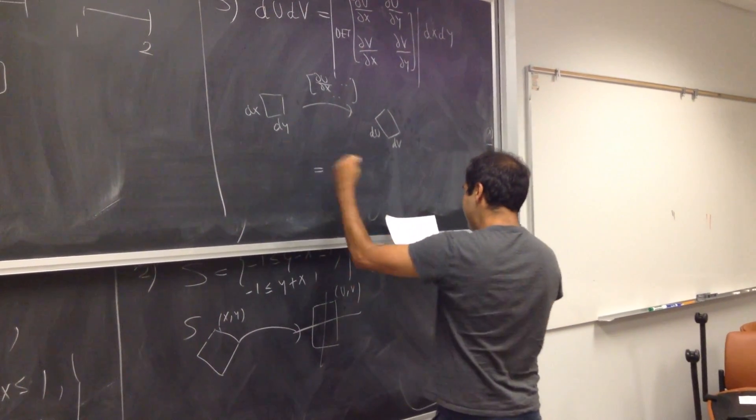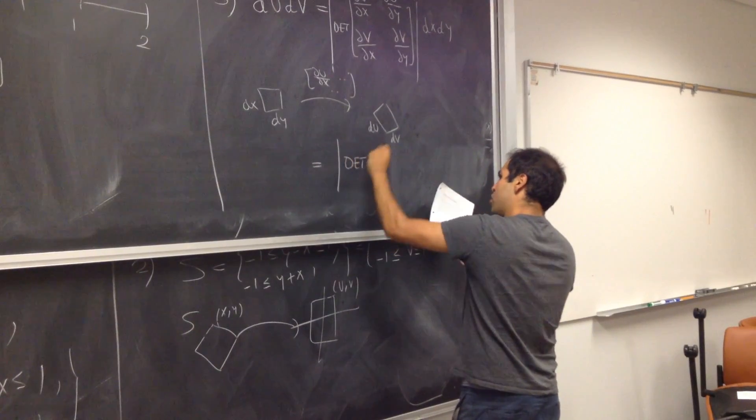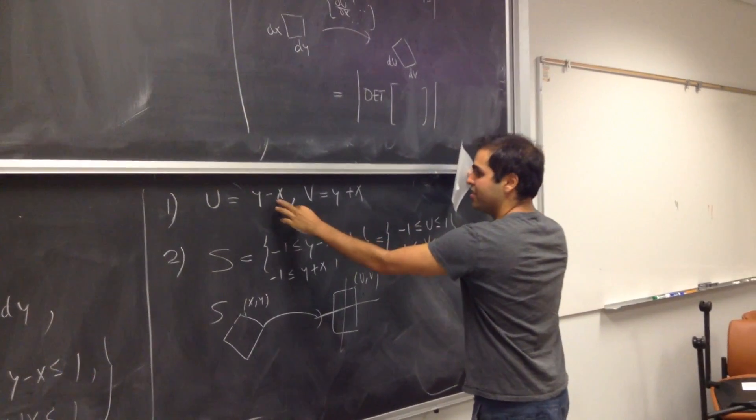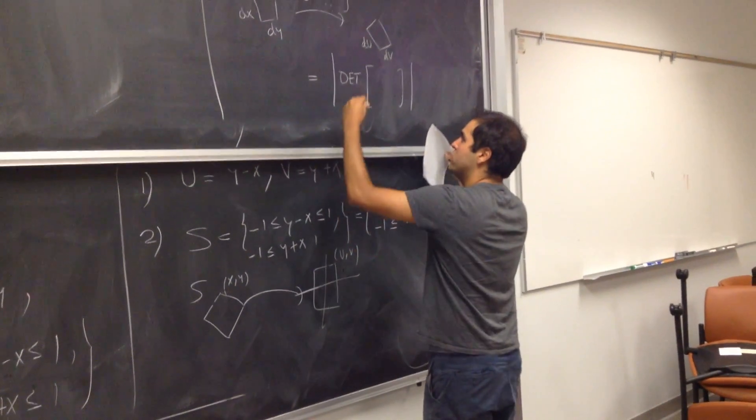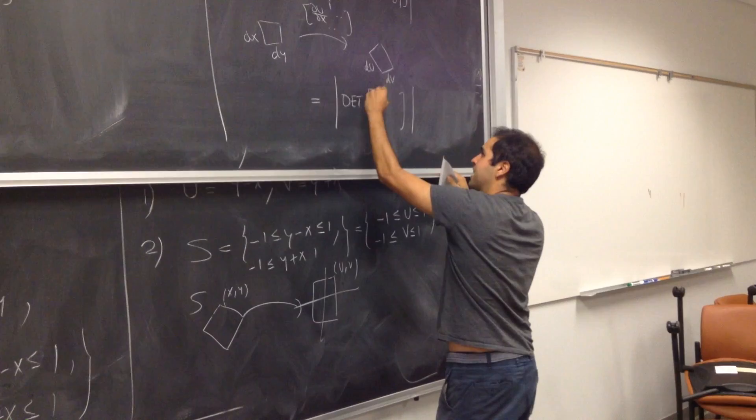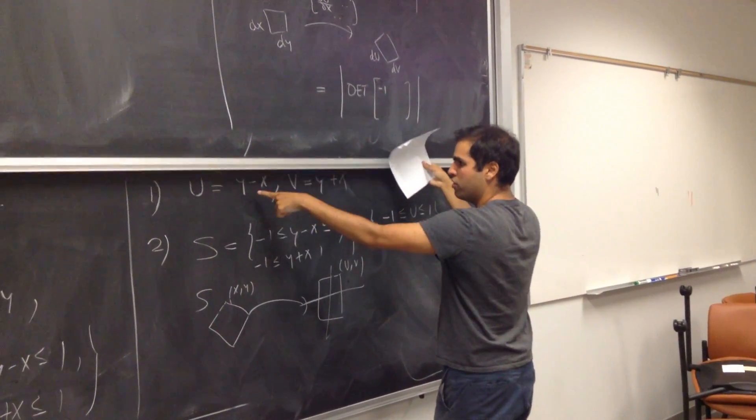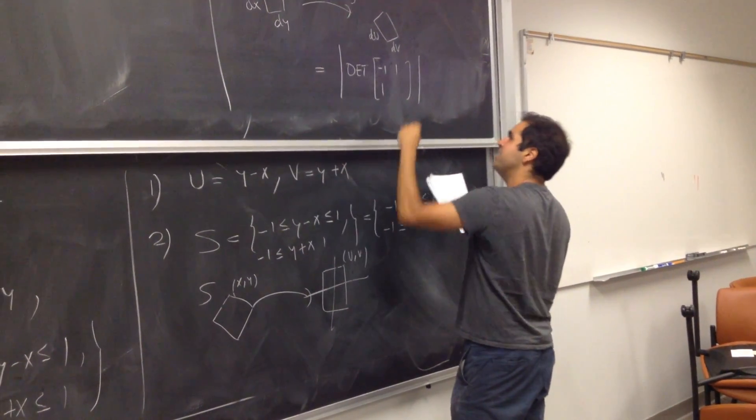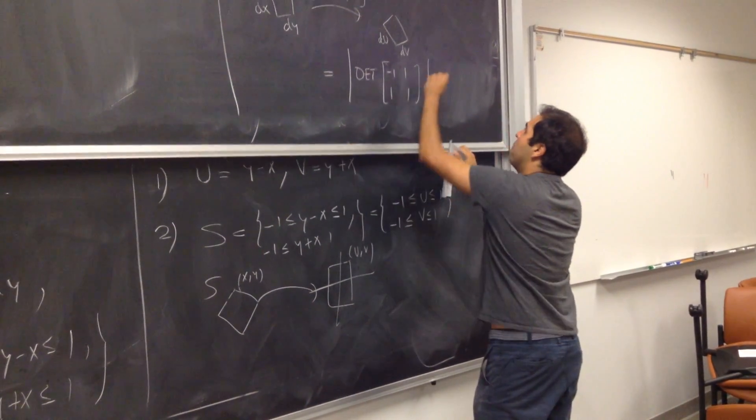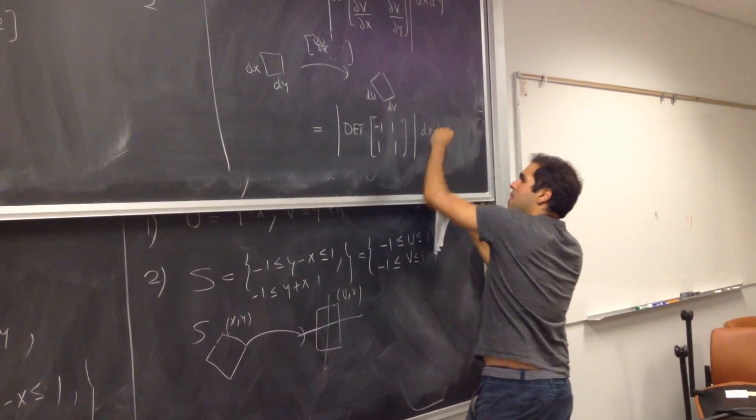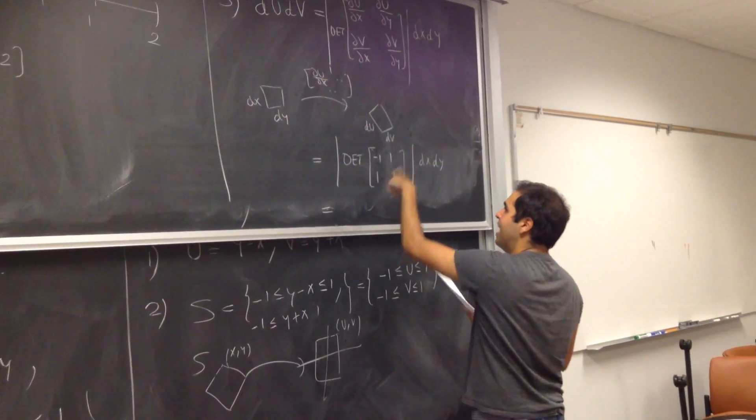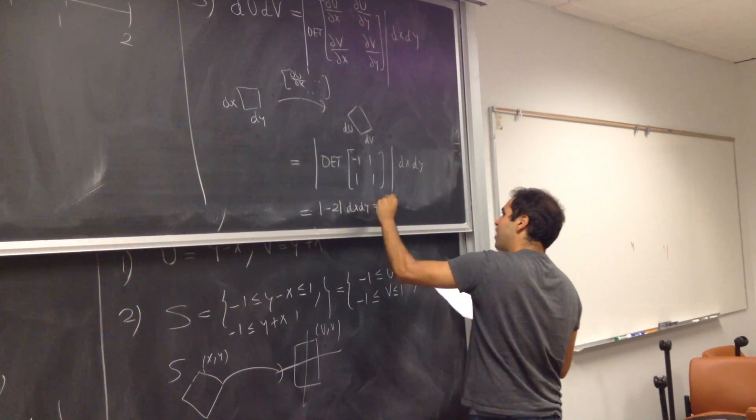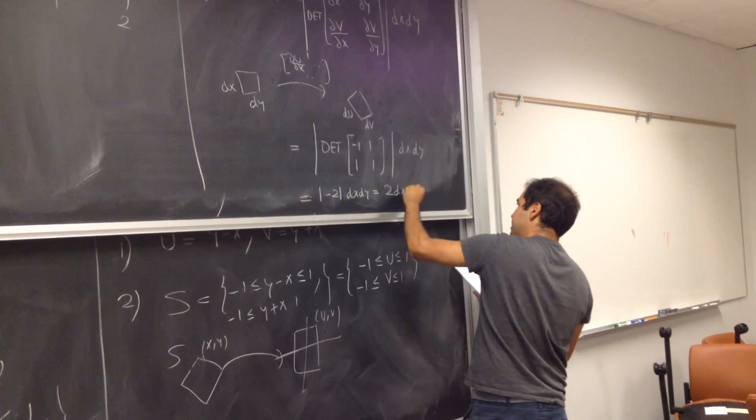So, we get absolute value of determinant of y minus x. So, partial u over partial x. Partial u over partial x is minus 1. Partial u over partial y is 1. Partial v over partial x is 1. Partial v over partial y is 1. So, dx dy. And we get, so determinant becomes minus 1 minus 1. So, absolute value of minus 2 dx dy, which becomes 2 dx dy.